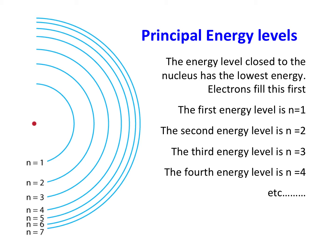First of all we have what are called the principal energy levels. These are sort of the diagrams that I've drawn on the board in a typical Bohr model. The first energy level is the one that's closest to the nucleus — it has the lowest energy. Electrons will always try and arrange themselves with the lowest energy possible, so the first electron will go into that first energy level, which is called n equals 1.